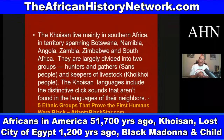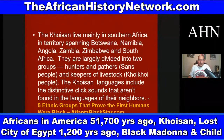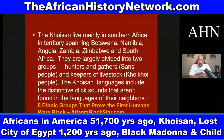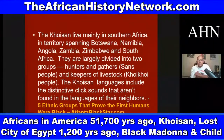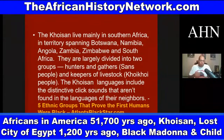The Khoisan live mainly in Southern Africa in territory spanning Namibia, Angola, Zambia, Zimbabwe, and South Africa. They are largely divided into two groups: hunters and gatherers known as the San people, and keepers of livestock known as the Khoikhoi people. The Khoisan languages include distinctive click sounds not found in the languages of their neighbors.